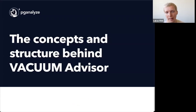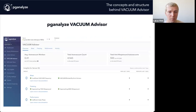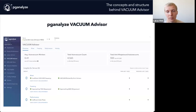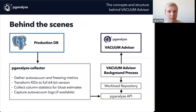Let's talk a little about how Vacuum Advisor is structured. It's a new feature in the PG Analyze UI — if you have an existing account, you'll find Vacuum Advisor on the left menu. Vacuum Advisor is available on the scale and enterprise plans, and you can have it working automatically once you have the newest collector version. You may have to update your collector to get all the data flowing, but it should already be working in your account otherwise.